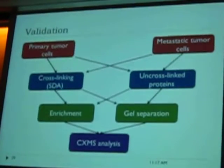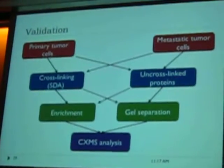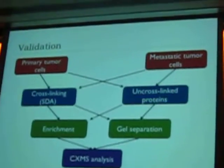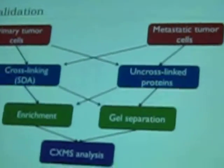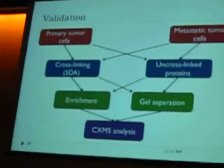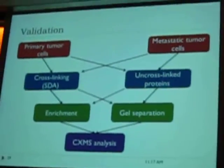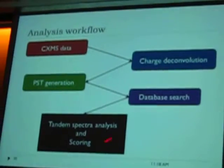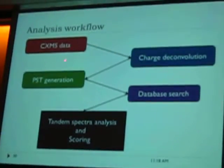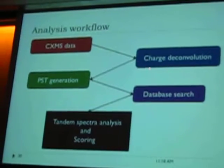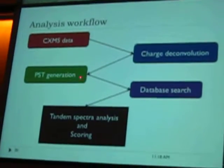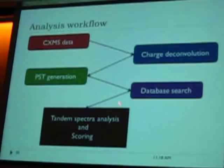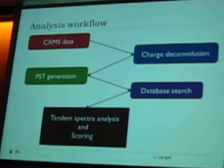This is the validation system we are using. We have primary and metastatic fitness cells from a sequence and melanoma cells, and we are doing cross-linking to validate the protein-level functionality of XLPM. This is the typical workflow — we do charge recognition, generate PST tags, do the data search, and we'll be using PYI.